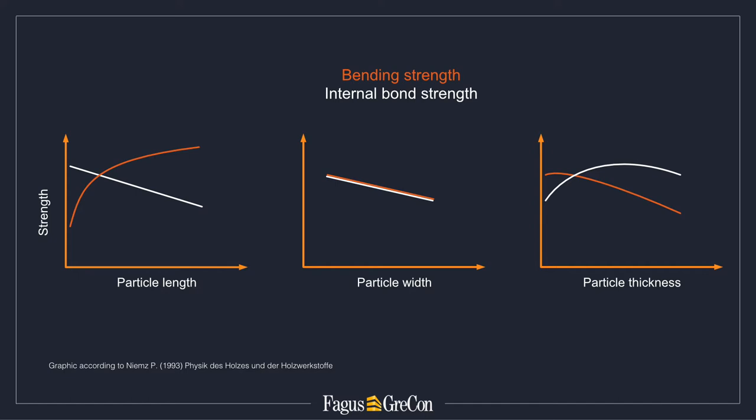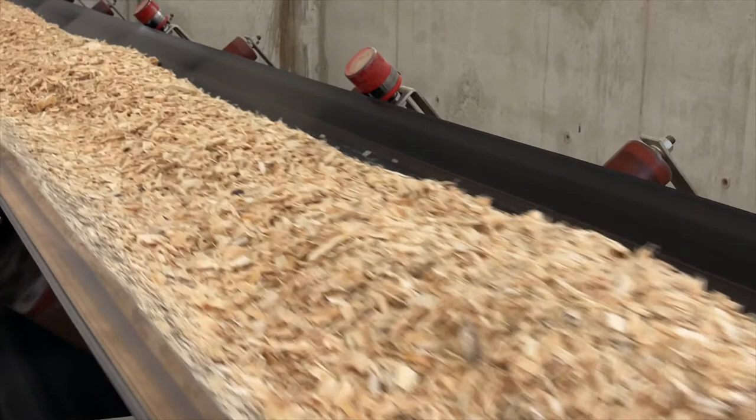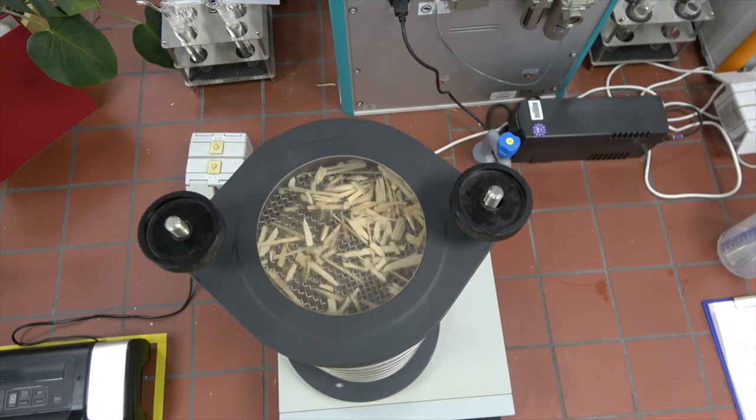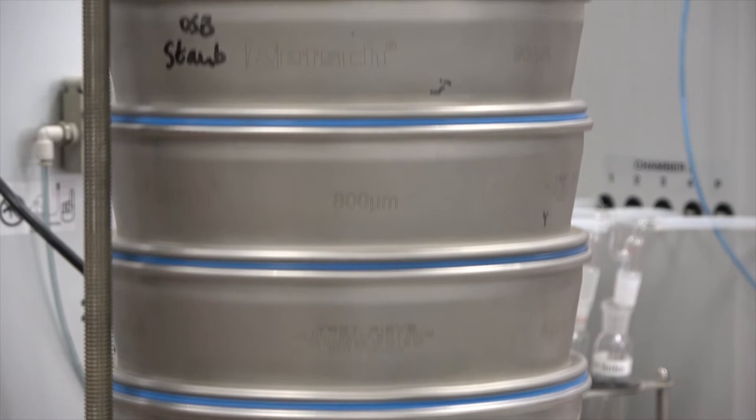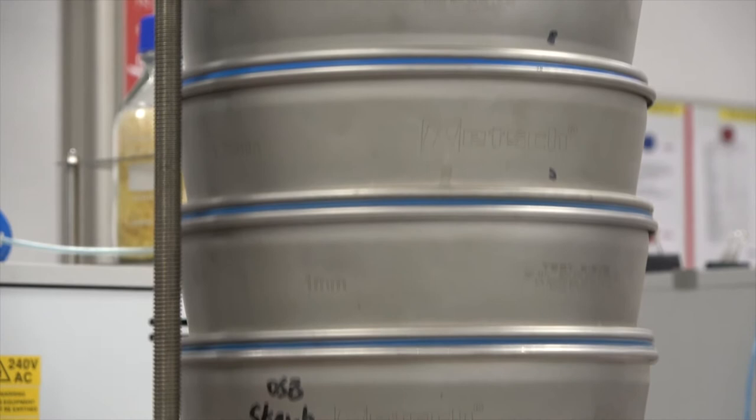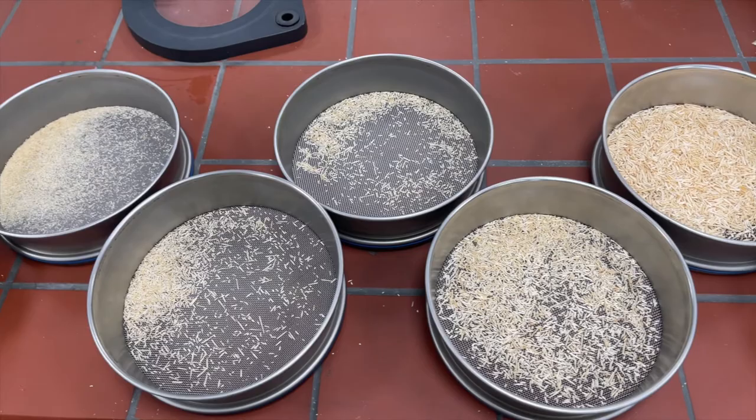Let's first look at what the conventional laboratory work looks like for particle quality control. The most common is the sieving method. A particle sample is taken after the knife ring flaker and sieved in the laboratory. The weight of the individual fractions is then determined. However, the result only indicates the width of the particles. Another disadvantage is the time required for sieving and the subsequent analysis. Additionally, the measuring results depend to a large extent on the sieving time.